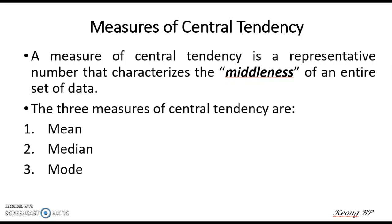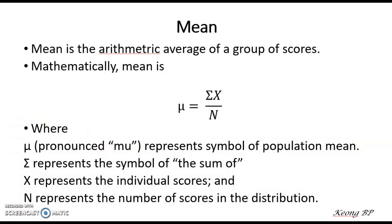There are basically three measures of central tendency as I have mentioned. They are mean, median, and mode. How do we calculate the first measure, which is the mean? Mathematically, mean is calculated through a formula. The mean is represented by a symbol which we pronounce as mu, which represents the population mean.